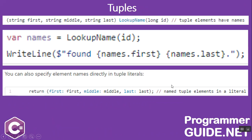In another example for tuples with named elements, you can have a named collection of strings — string first, string middle, and string last. When LookupName returns the tuple, each element has a name, so you can individually access properties like names.first and names.last. You can also specify element names directly in tuple literals, mentioning which value goes to first, middle, and last. This is called named tuple elements in a literal.